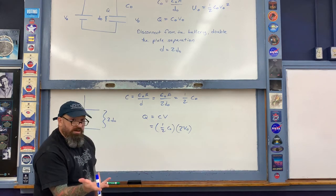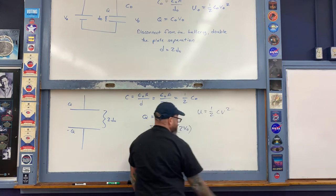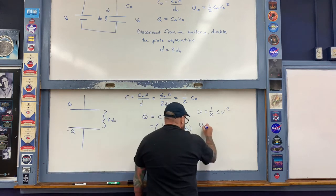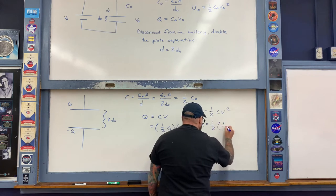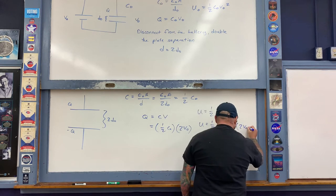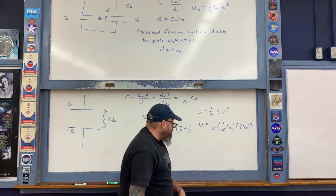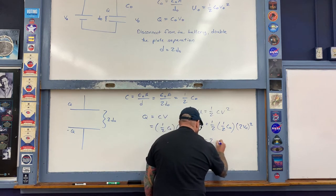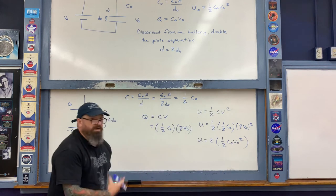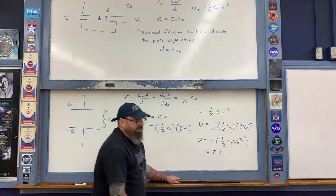Now calculate the new potential energy: U = ½CV² = ½·(½C₀)·(2V₀)² = ½·(½C₀)·4V₀² = 2·(½C₀V₀²) = 2U₀. The final potential energy is twice the original value.